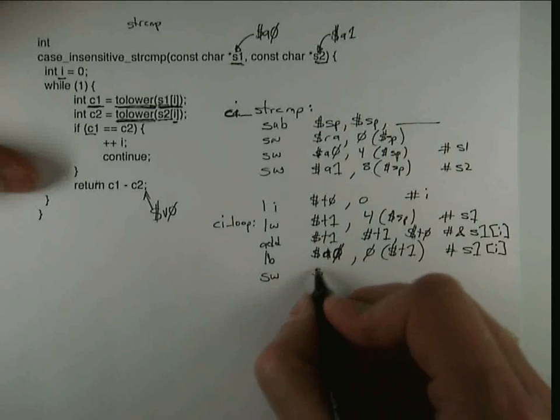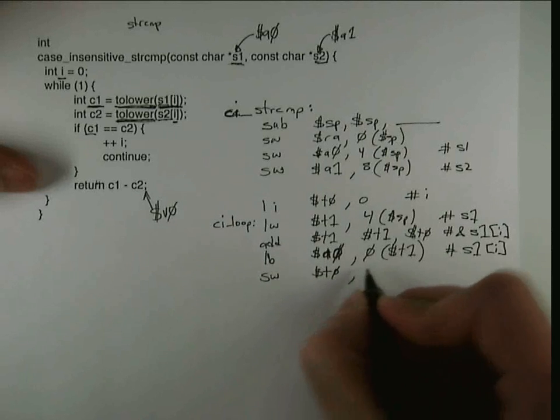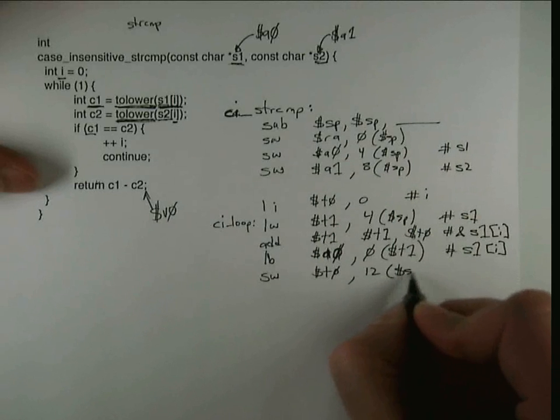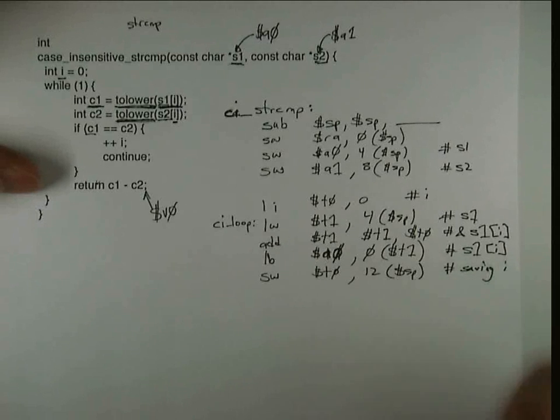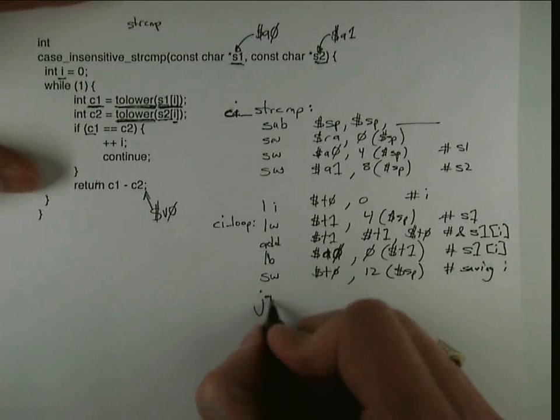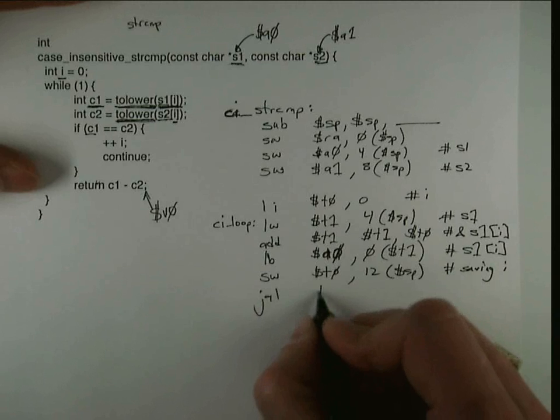And so what I'm going to do is I'm going to save T0 at this point. And I'm going to just grab the next stack slot, which is the 12 offset of the stack pointer. So I'm saving I. And now I can do a jump and link to tolower.